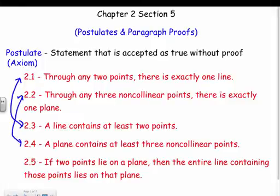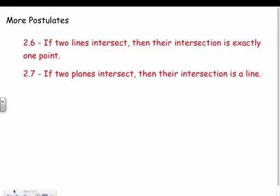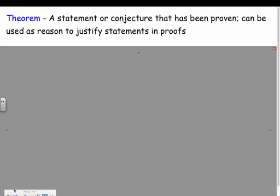Postulate 2.5 says if two points lie in a plane, then the entire line containing those points lies on that plane — if you really think about that one, it should make sense. We also have: if two lines intersect, their intersection is exactly one point; and if two planes intersect, their intersection is a line. We've talked about and defined all of these things — they're postulates, just known facts, and we do not need to prove them.